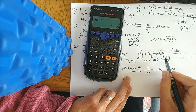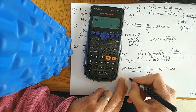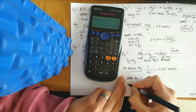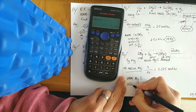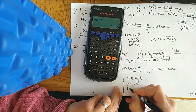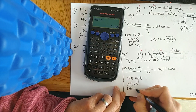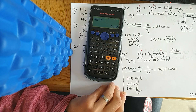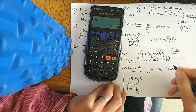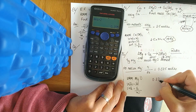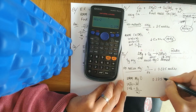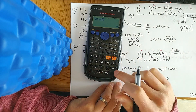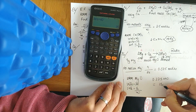To find the mass of MgO produced, get the relative molecular mass of MgO: one magnesium plus one oxygen. Relative molecular mass is 40. Then 0.375 multiplied by 40 gives 15 grams.